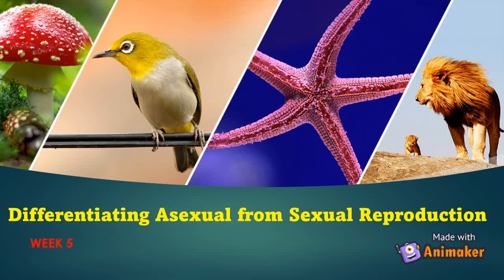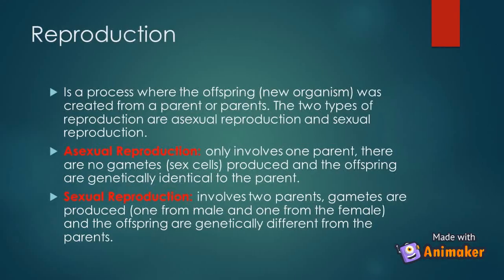So now we're going to differentiate asexual from sexual reproduction of organisms. Reproduction is a process where the offspring or new organism is created from a parent or parents. The two types of reproduction are asexual reproduction and sexual reproduction.